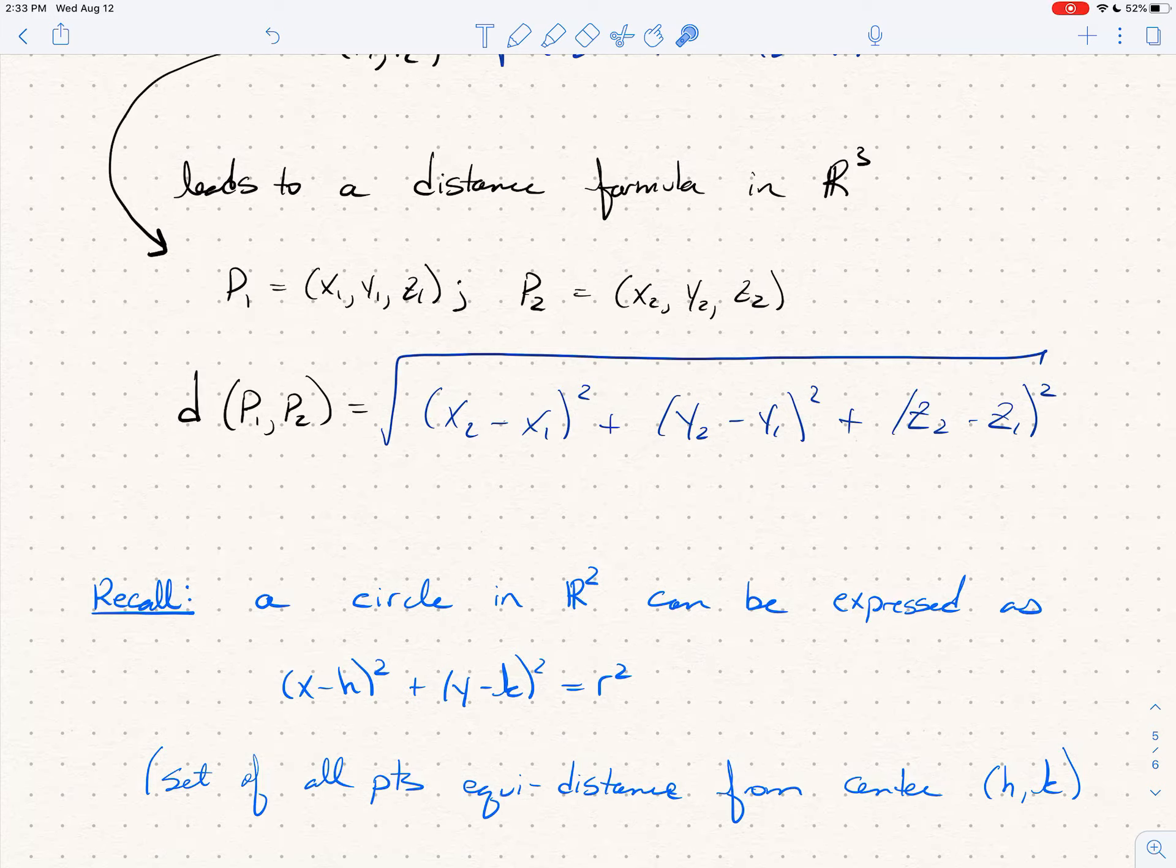If I took a radical of both sides, then what I'm getting is the distance from the point (x, y) to (h, k) is always r. So circles are just the set of all points that are equal distance from some center point (h, k). And you can do that not just in two space, you can do that in three space.